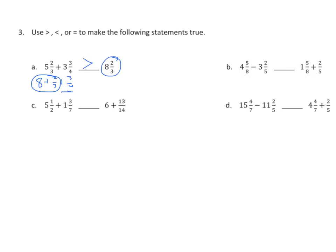Going straight to C with the same kind of reasoning: I have 5 plus 1 is 6, plus 1 half plus 3 sevenths. This one is going to be pretty close. If we find our common denominator of 14 and convert 1 half to 14ths, we get 7, and 3 sevenths becomes 6. These are exactly the same because 7 plus 6 is 13 on both sides.